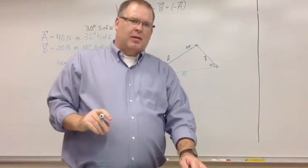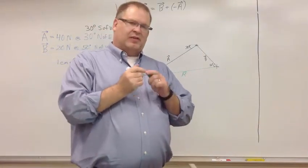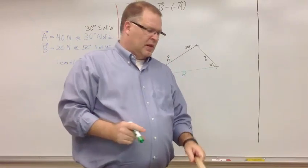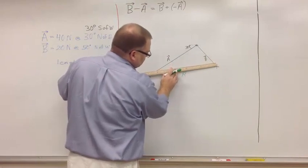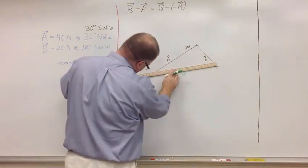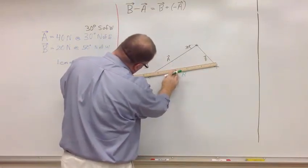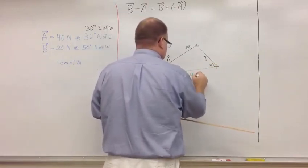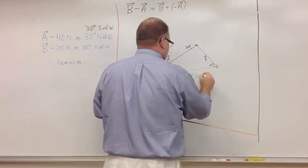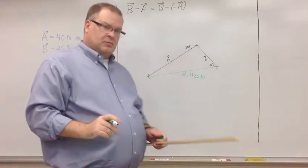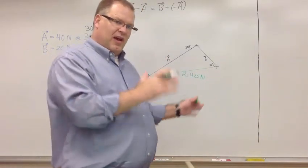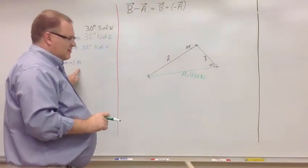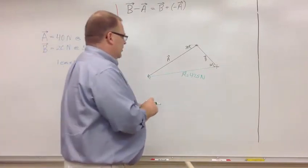Now, again, to end the problem, I need to have two things about vector R. I need to have distance. I need to have direction. So, measuring the distance. 47 and a half newtons. 47 and a half centimeters, but each centimeter is a newton. You can have my answer back on my original units. 47 and a half newtons.